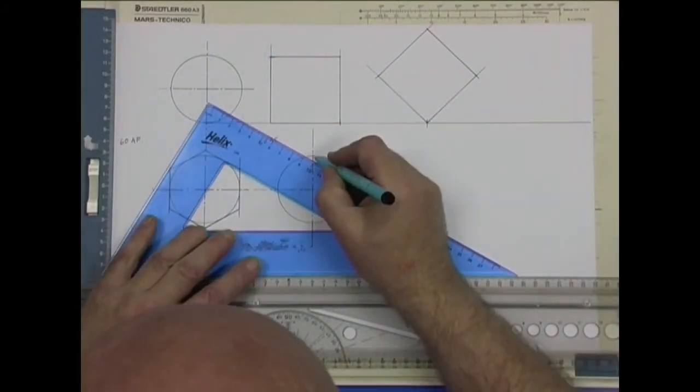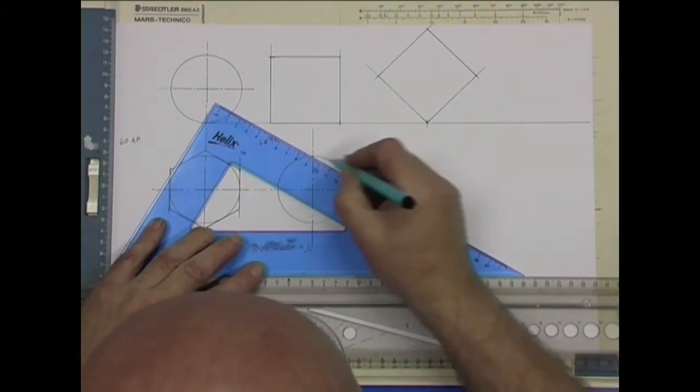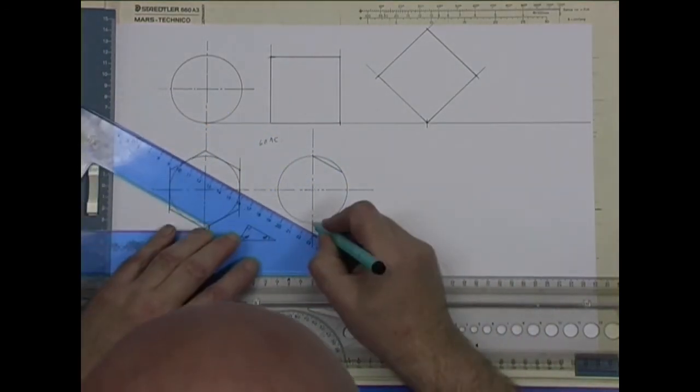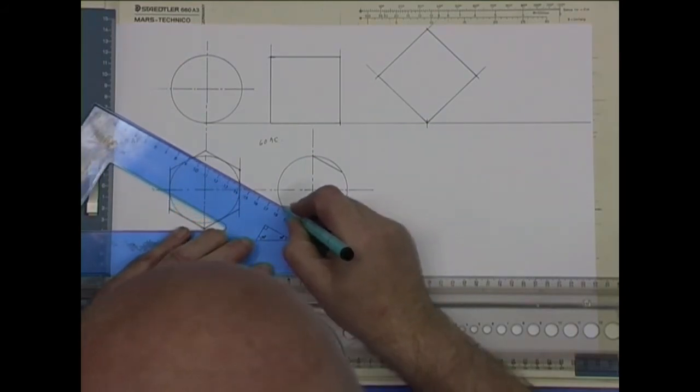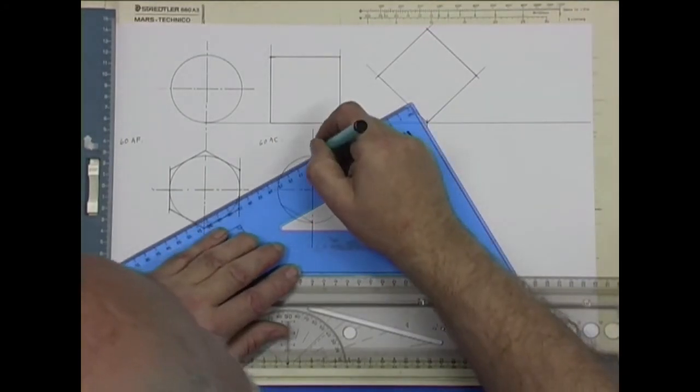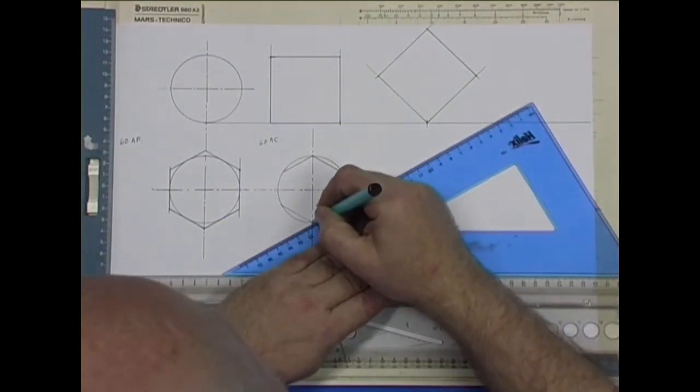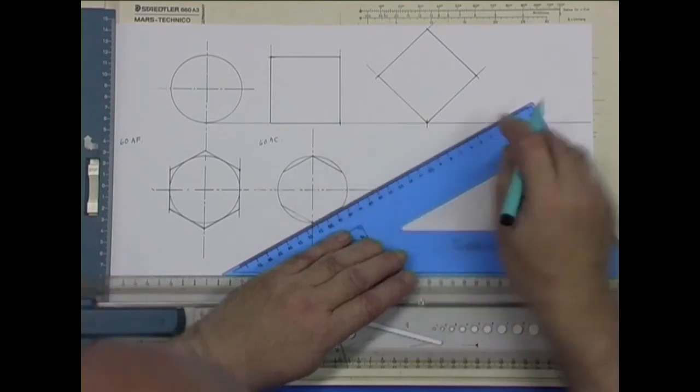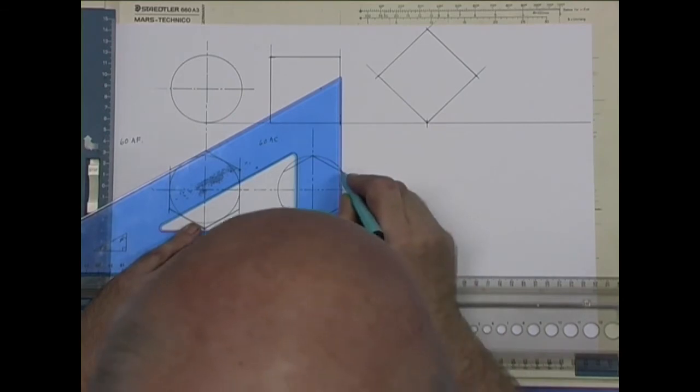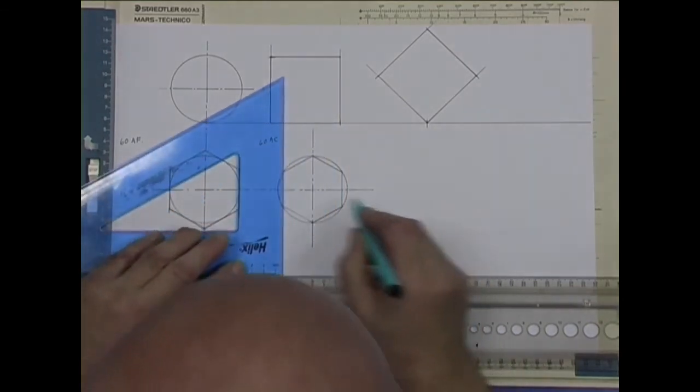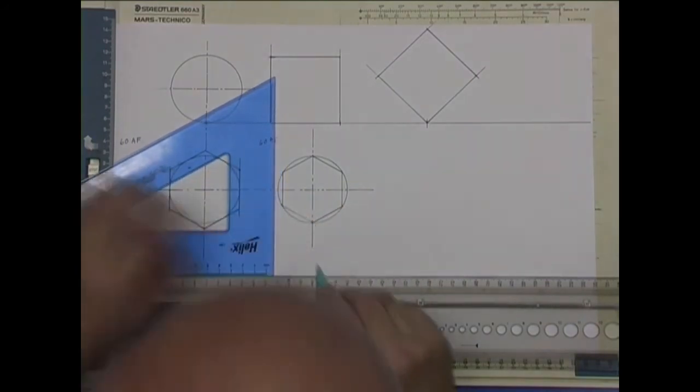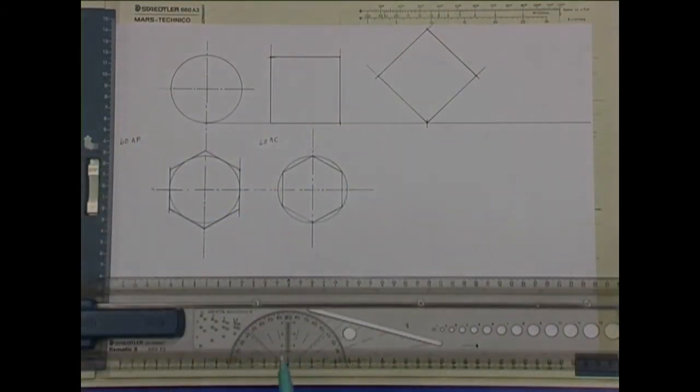The same angles as before. Drawing at 60, so that's 30 degrees, 30 degrees. And if it's drawn accurately, they should line up with each other. And the hexagon is drawn.